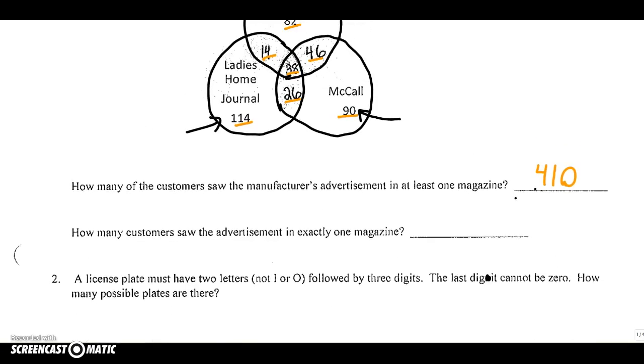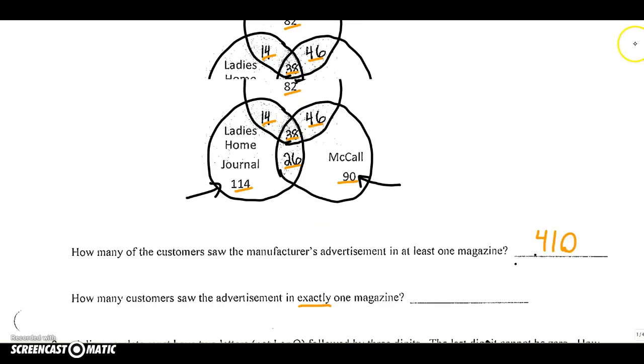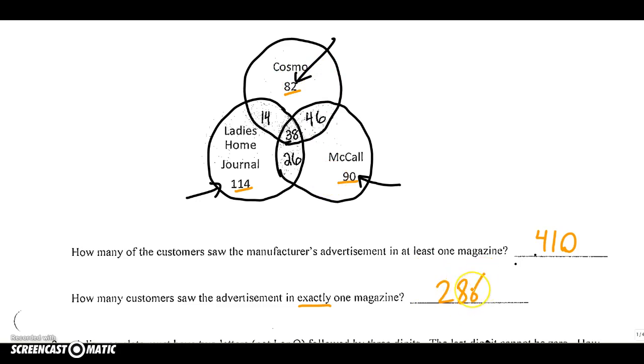How many customers saw the advertisement in exactly one magazine? Make sure you're looking for these words. Exactly one magazine takes out the people in the middle because they saw it in three. It also takes out these people who saw it in two. So the only thing that's left are the three people along the outside. And if you add those together, you get a total of 286.